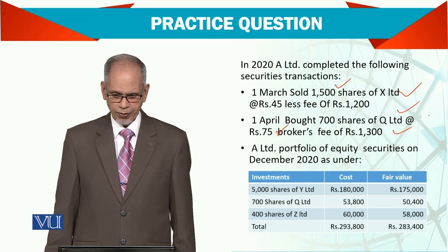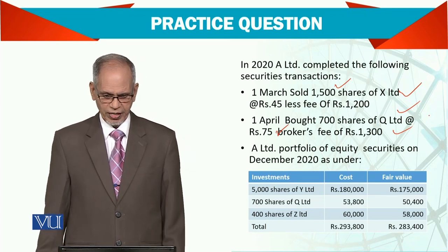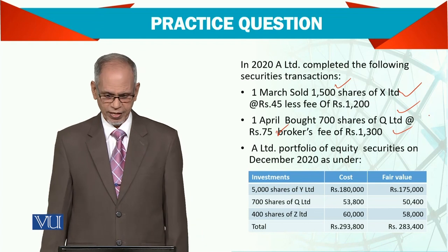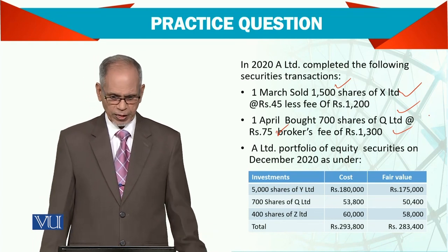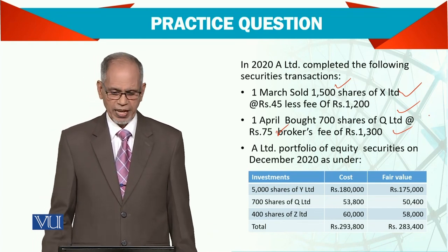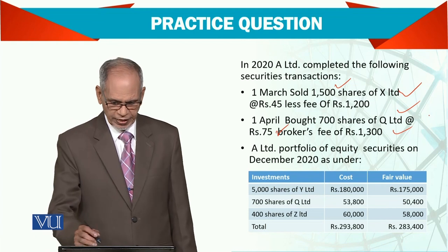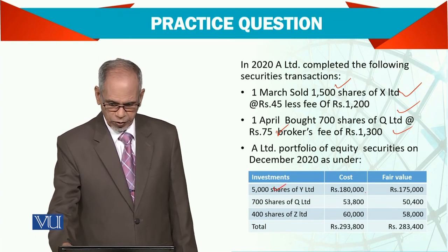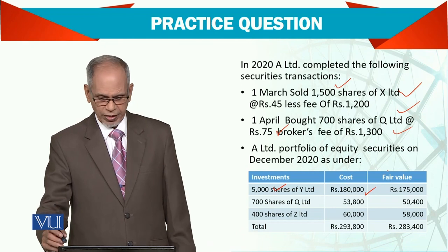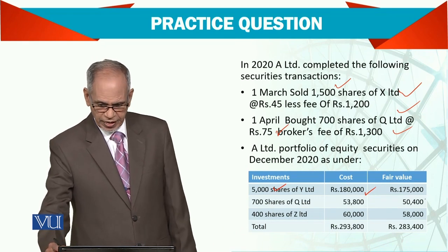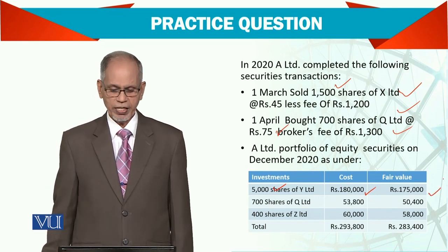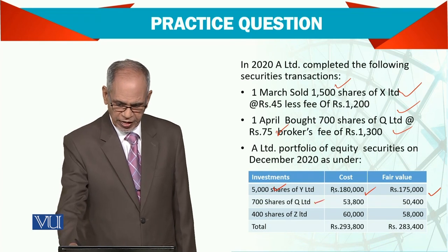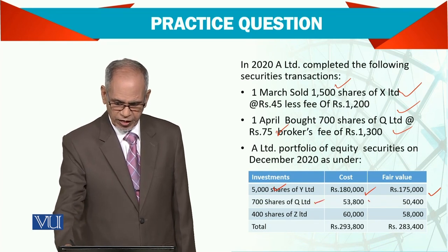A Limited's portfolio at end of December 2020 — in one year you will see the number of shares have changed. The shares of X are gone, the shares of Y and Z remain, and 700 shares of Q have been purchased. The cost and fair values are different from before.